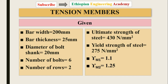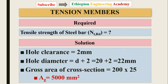The given values are: bar width 200 mm, bar thickness 25 mm, bolt shank diameter 20 mm, number of bolts six, number of rows two, ultimate strength of steel 430 MPa, yield strength of steel 275 MPa, partial safety factor γM0 = 1.1, and partial safety factor γM2 = 1.25.